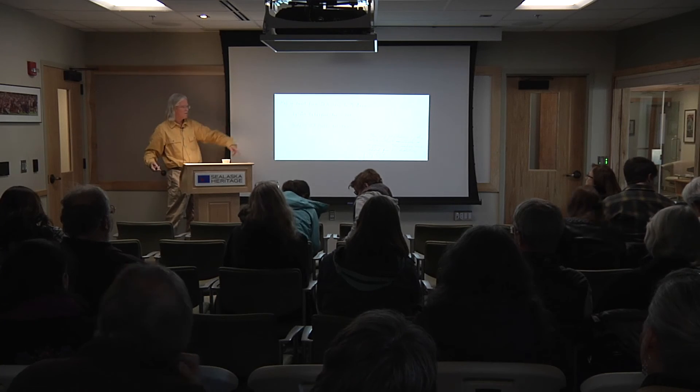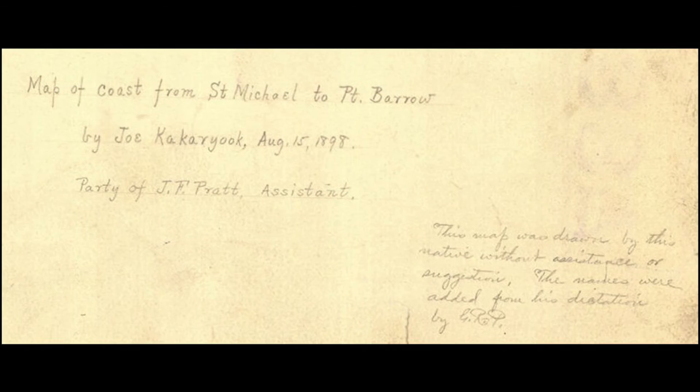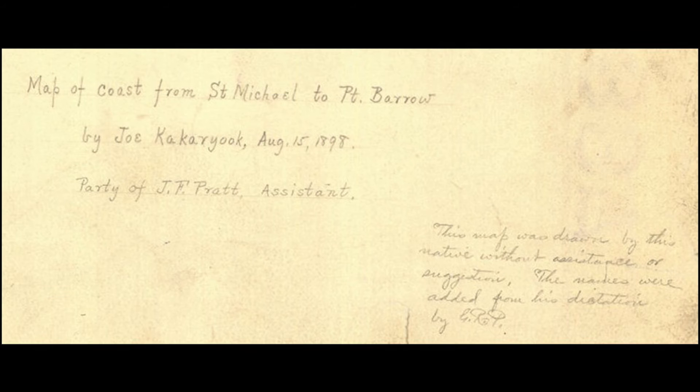They get Joe to make a series of maps — party of J.F. Pratt. 'This map was made by this native without cooperation or suggestion. The names were added from his dictation.' That same process as with Davidson. Eskimo native of Port Clarence — here's Port Clarence on Seward Peninsula. I've been there, and this is incredibly accurate: here's Grantley Harbor, there's Taksuk, and then into the Saline Basin, now called Imerup. Up the river there is the first major important village — an important village was marked as a circle with a dot in the middle.